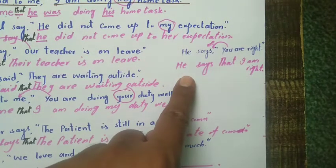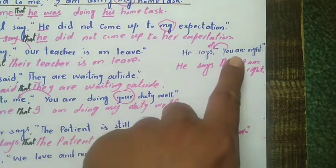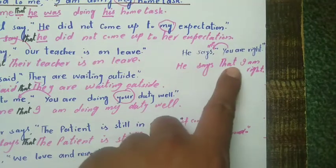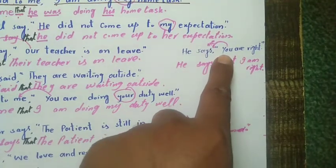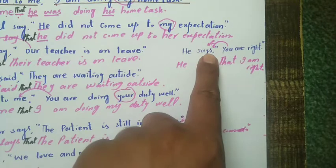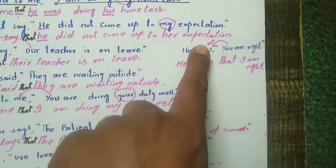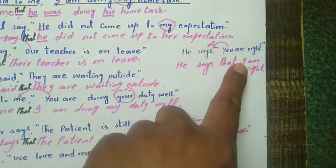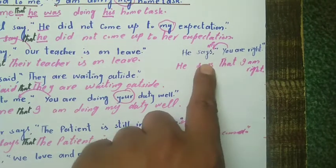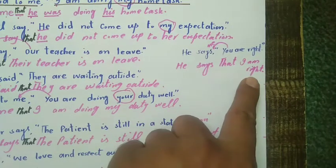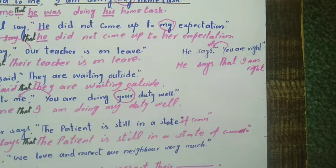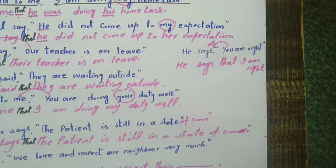Last example: 'He says, you are right.' Since the reporting speech is present tense, we do not change the reported tense. 'You' is second person, and since there is no object here, we change the subject 'you' to 'I'. The indirect sentence is: 'He says that I am right.' Thank you. This lesson covered pronouns only. The next lecture will cover how to change the tenses.